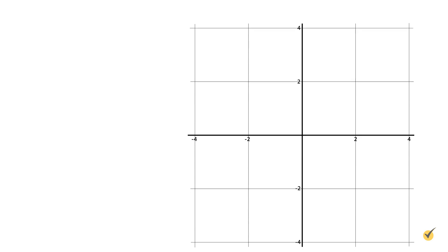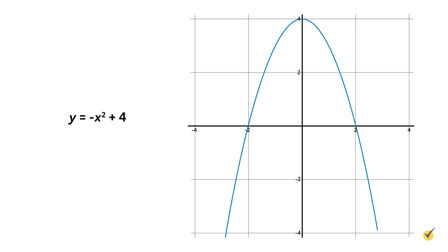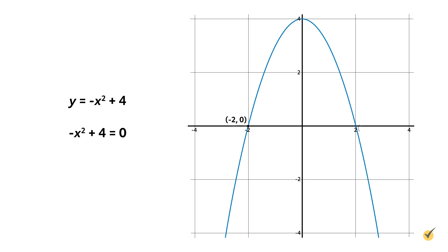Let's look at another example. Consider the graph for y equals negative x squared plus four. Notice that the value for a is negative, so this parabola opens downward. We can use the graph to solve the equation negative x squared plus four equals zero. The graph intersects the x-axis at the points negative two, zero and two, zero, so x equals negative two and two. There are two real rational solutions.